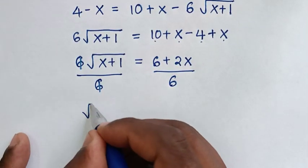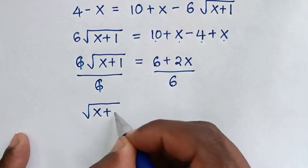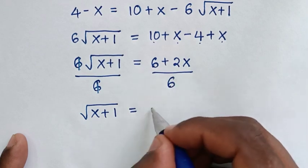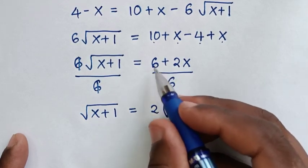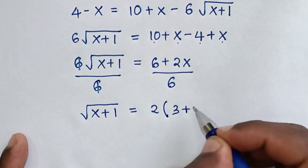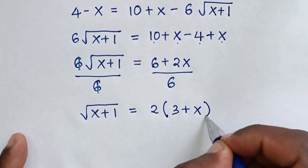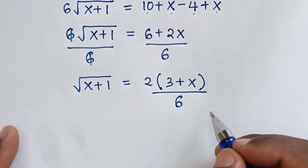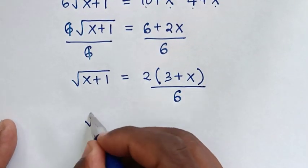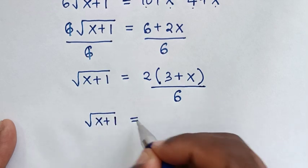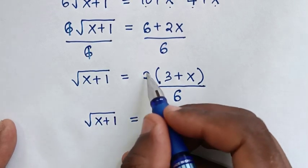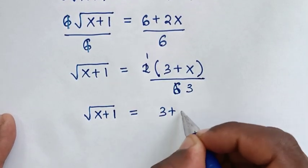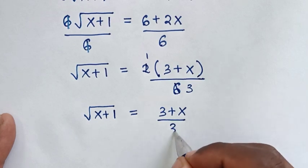We divide both sides by 6. The left side becomes square root of (x plus 1). On the right side, 2 is a common factor, so we take it out: 2 times (3 plus x) divided by 6. This simplifies to (3 plus x) over 3. So square root of (x plus 1) equals (3 plus x) over 3.